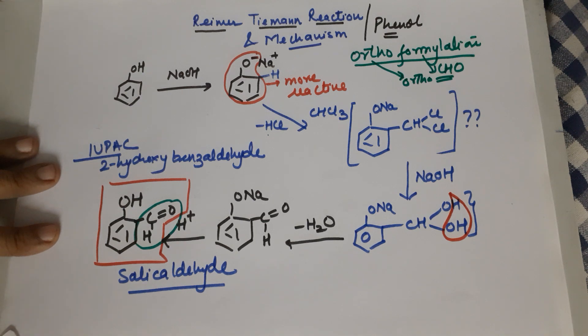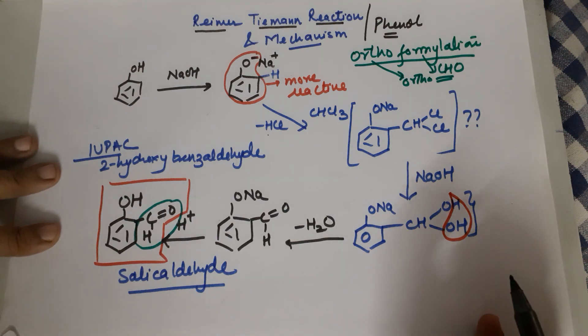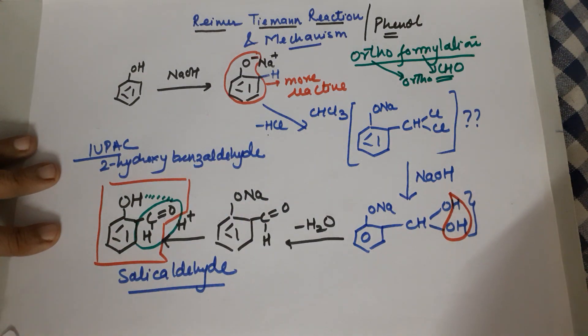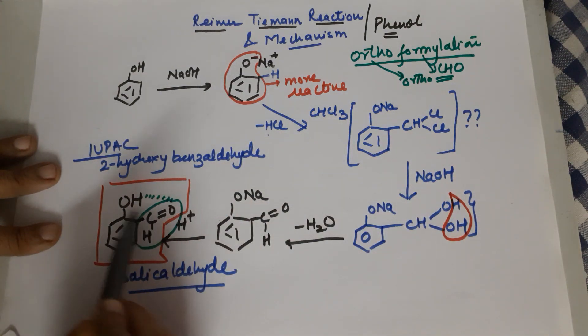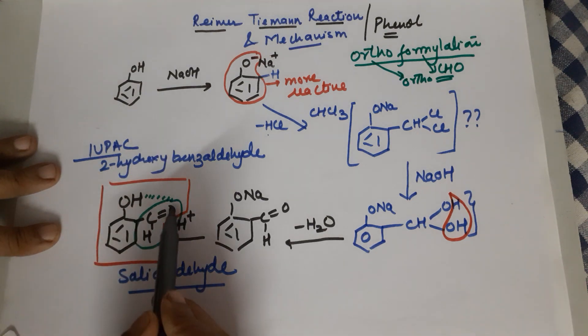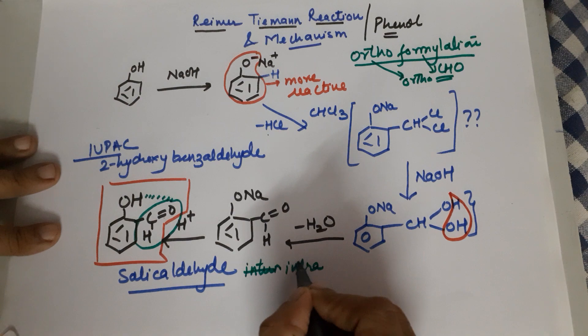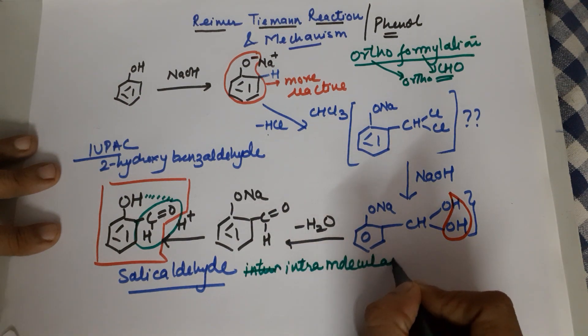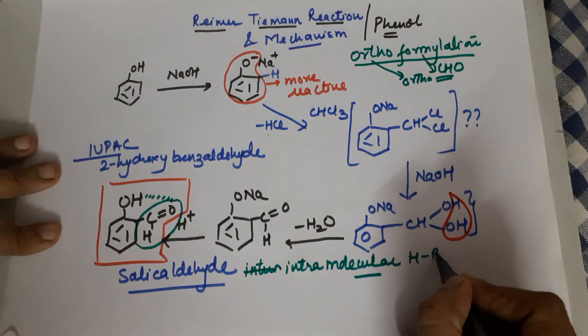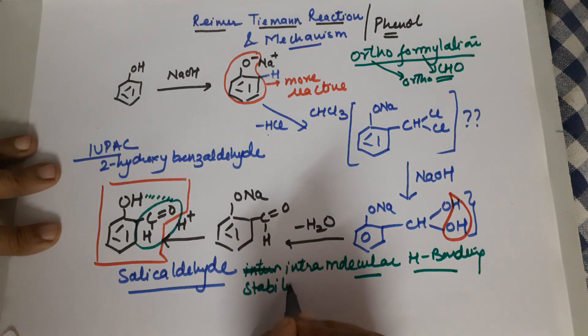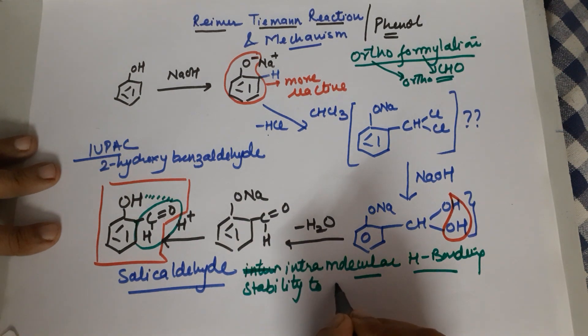Now, as I had said, why do we get ortho was an important part of the question which I want you to understand now. Pay attention. This H can form hydrogen bond to the lone pair of this oxygen. It is because of this ortho position, because of the vicinity of the OH to the aldehyde that there is intramolecular hydrogen bonding which takes place and this causes stability to ortho product.